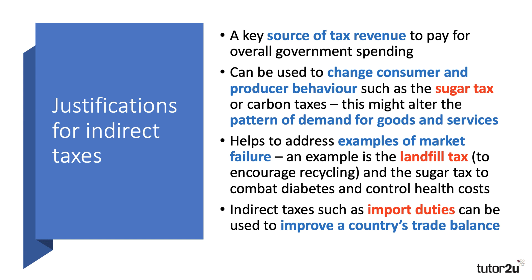Well, here are four key points. First of all, governments need to raise revenue to pay for their spending — for defence, education, health care, social housing — and indirect taxes are a key source of tax revenue. VAT is the third, sometimes second biggest source of tax revenue for the UK, at £134 billion a year. So there's a justification: the government needs to raise money to pay for public services and the welfare system that we expect.